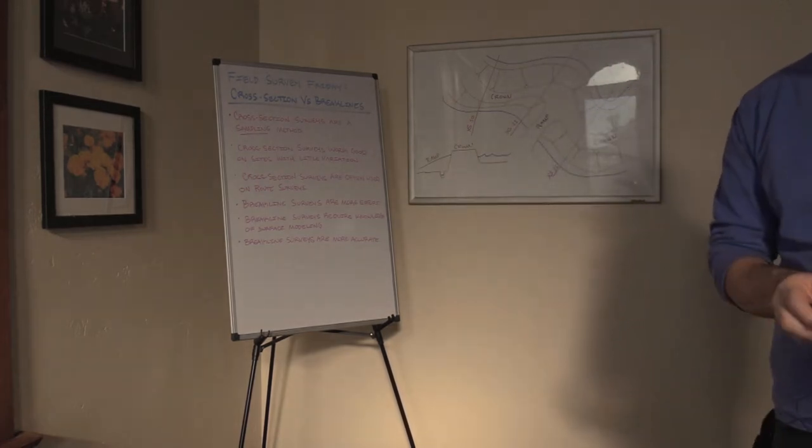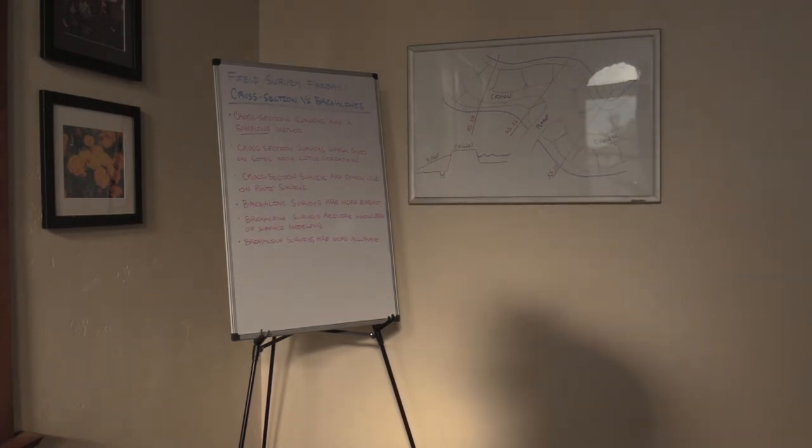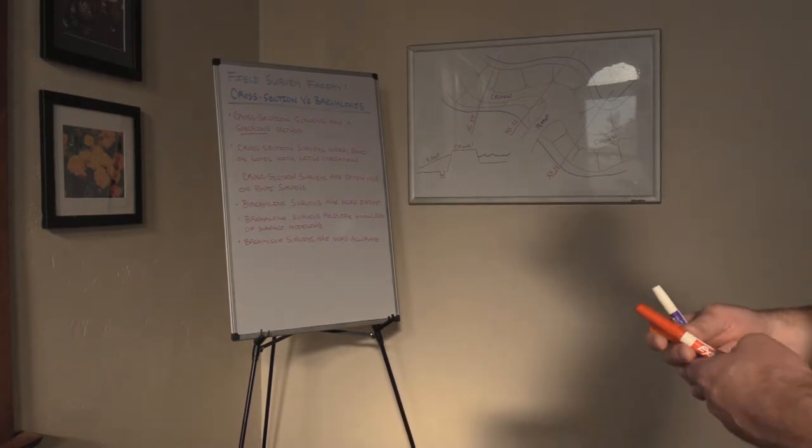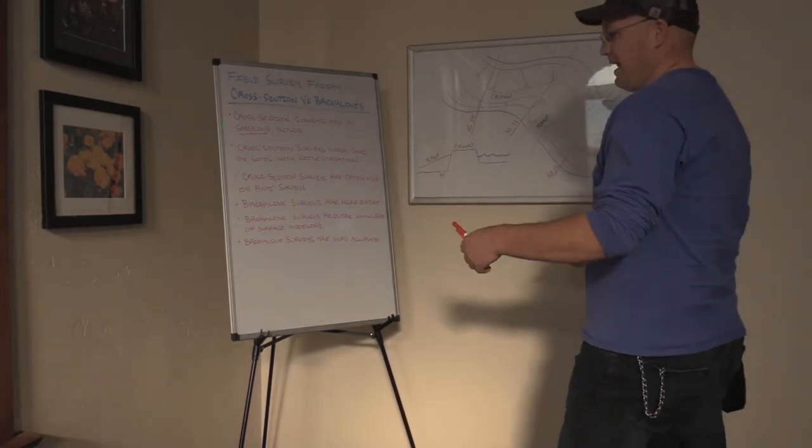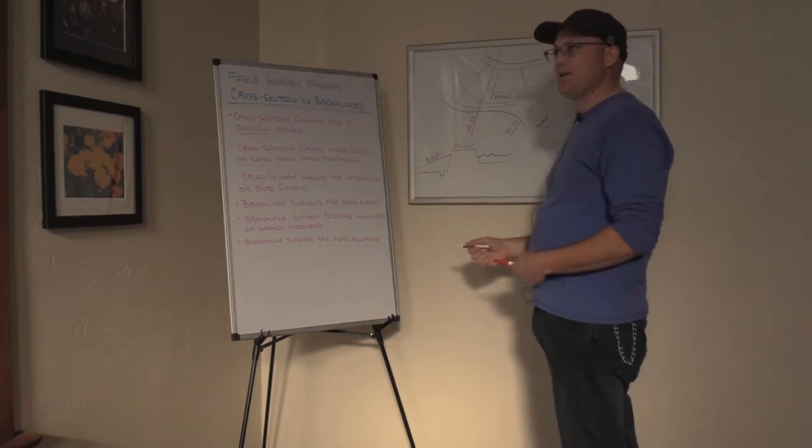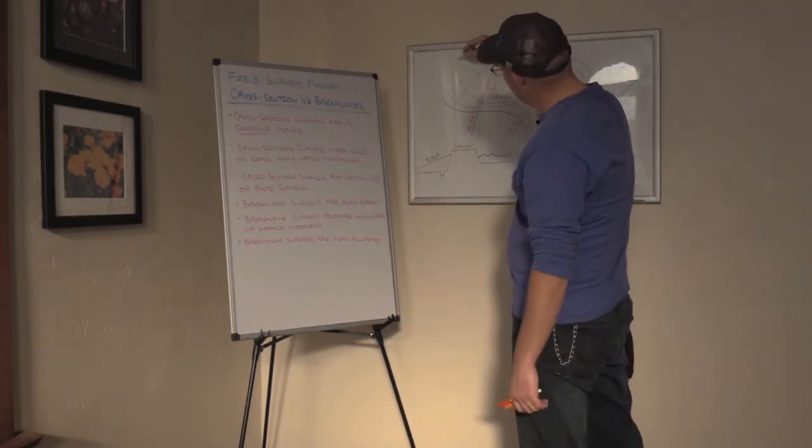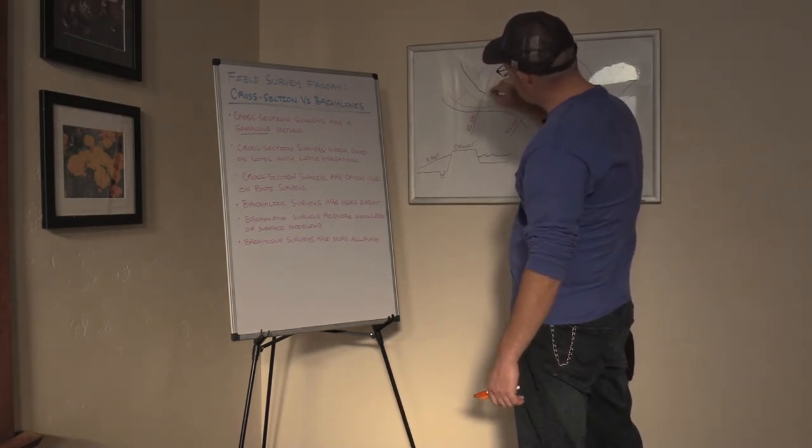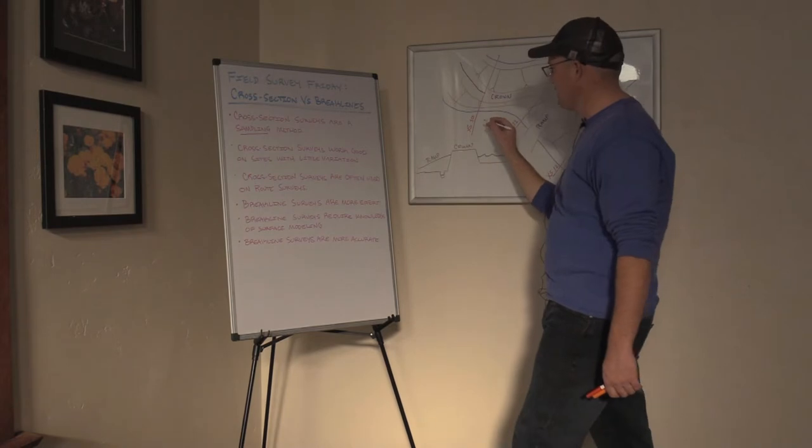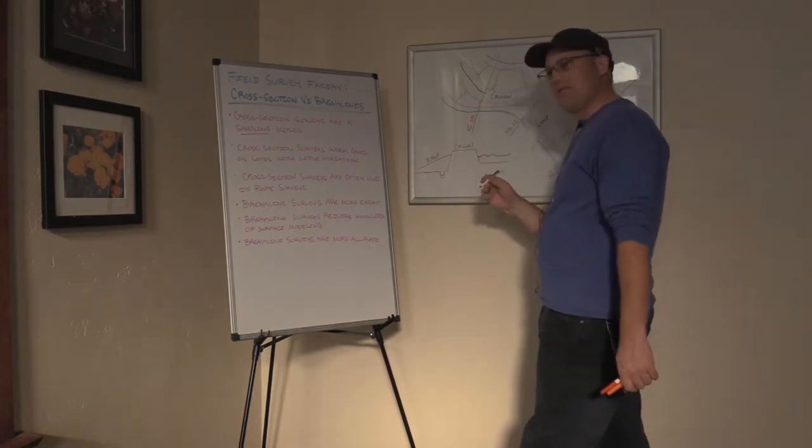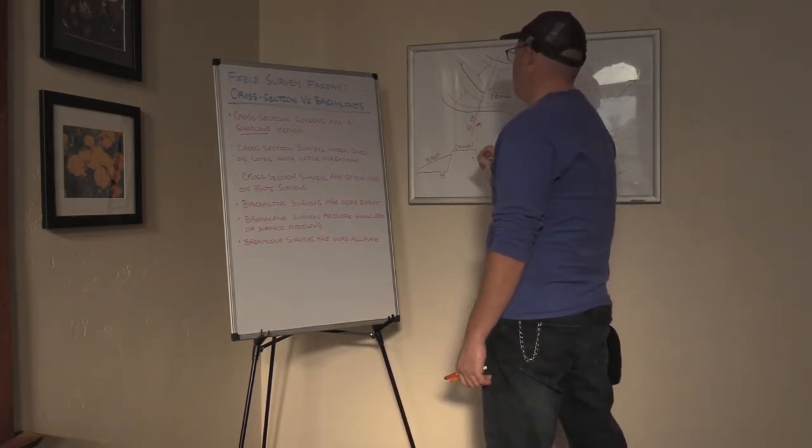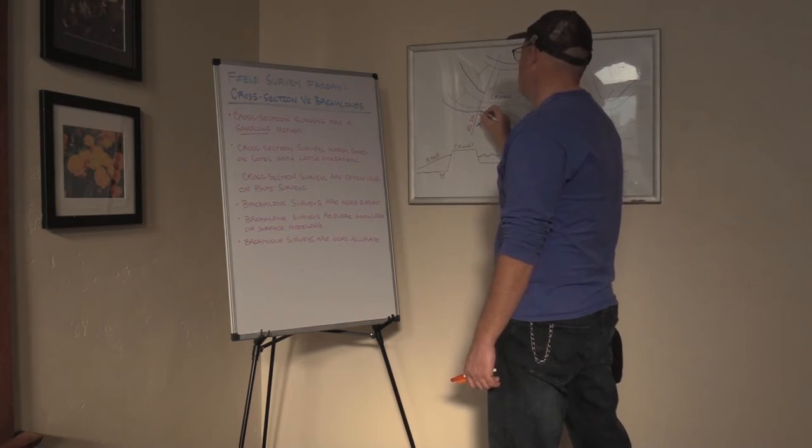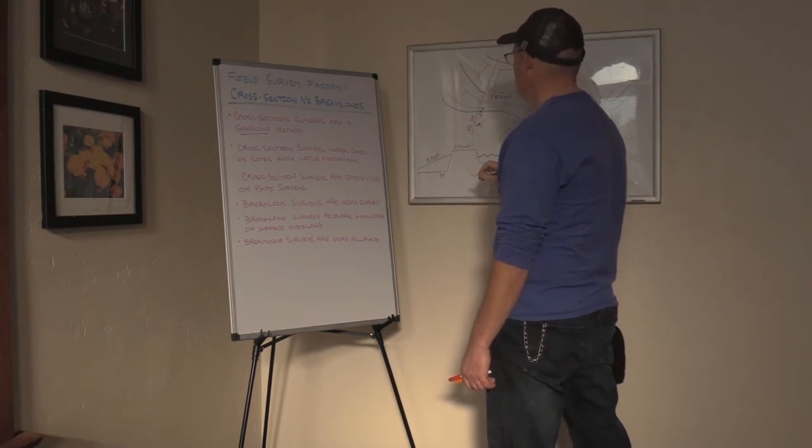So in a cross section survey, what you do, you usually use them with some kind of alignment, what we call an alignment. And with a cross section survey, you go out, and at some regular interval, let's say a hundred feet or 200 feet or a thousand feet or 500 feet, you go out and every time you get to that interval along the route, you stop and you survey a cross section. So you come out here, if this was a levee, get a shot in the field, get a shot, top of ditch, toe of ditch, top of ditch.